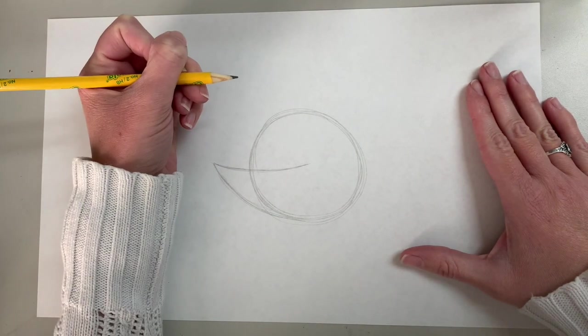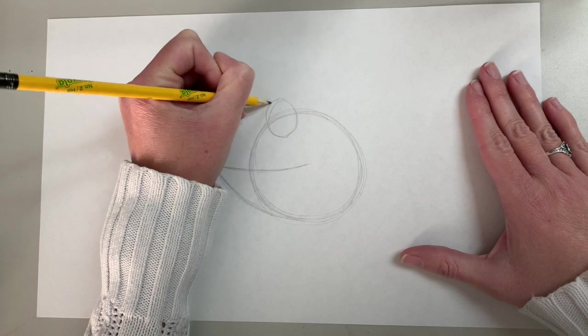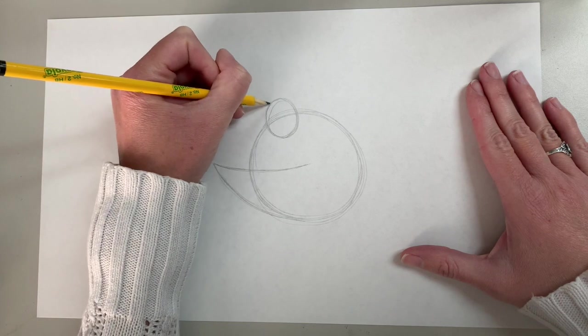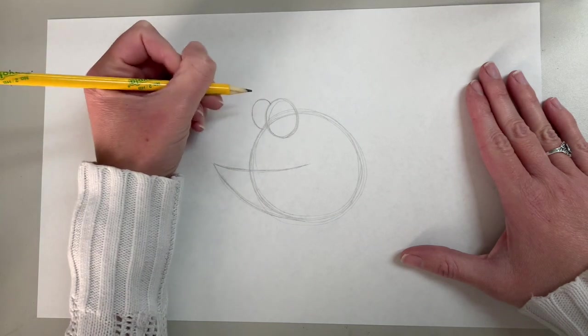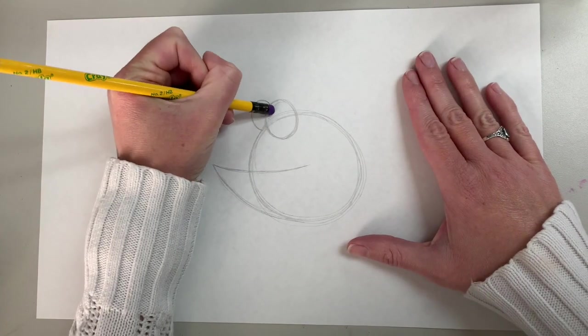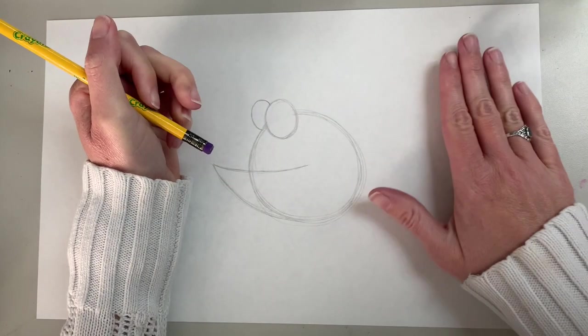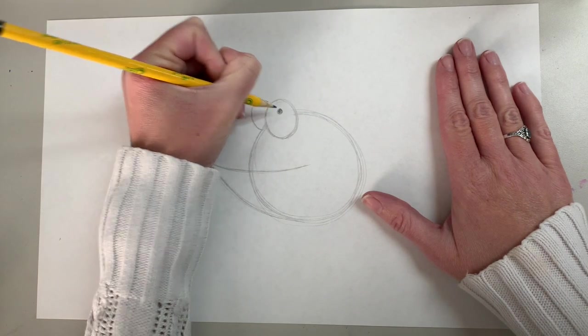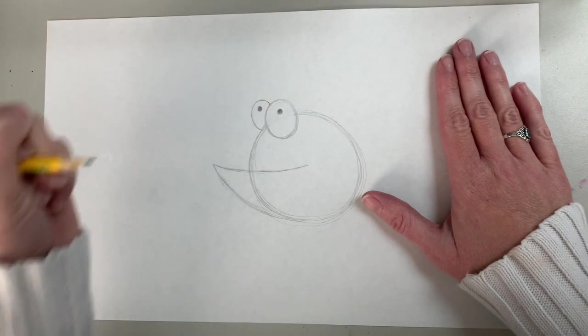Then we're going to start with our eyes. Our eyes are going to start up here. I have one big eye here and then one eye in the background coming off to the left. It connects to the top of our first eye and ends at the circle. Then we can take our eraser and erase out our marks on the inside of that circle there and then we're going to put in our pupils. One pupil here and then one pupil over here.